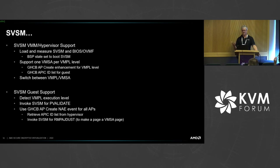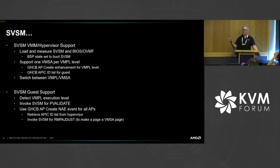We use APCreate for creating all the APs in the BIOS. We're now only measuring a single vCPU but are able to run multiple vCPUs without measuring all those extra vCPUs. We will have to make a call to the SVSM in order to change the page from a regular page into a VMSA page through the RMP adjust instruction.